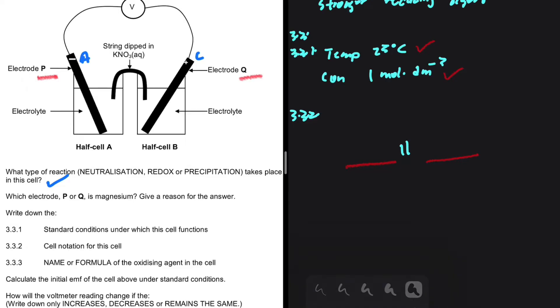The anode is magnesium. So we're going to have magnesium, magnesium 2 plus, and the cathode is lead. So we're going to have Pb 2 plus and Pb. And just like that, we have our cell notation.